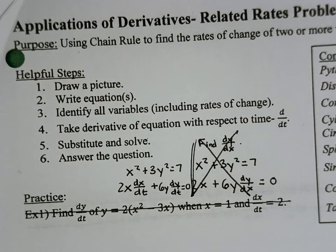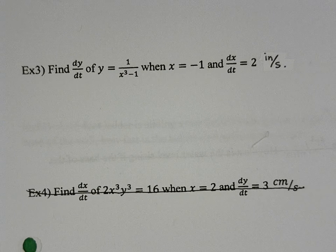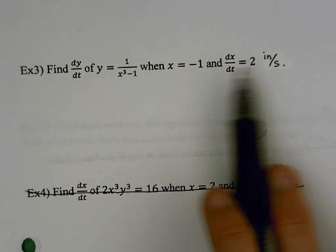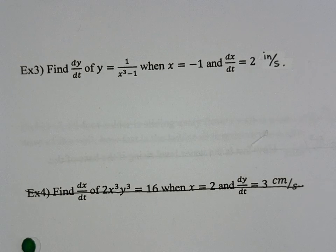That's what we're doing in step four. Step five, we're going to substitute into our equation and solve for whatever we're looking for. Let's go ahead and look at Example 3. They say: find dy/dt of y = 1/(x³ − 1), when x = −1 and dx/dt = 2 inches per second. We're given those two pieces of information and asked to find dy/dt of this equation.